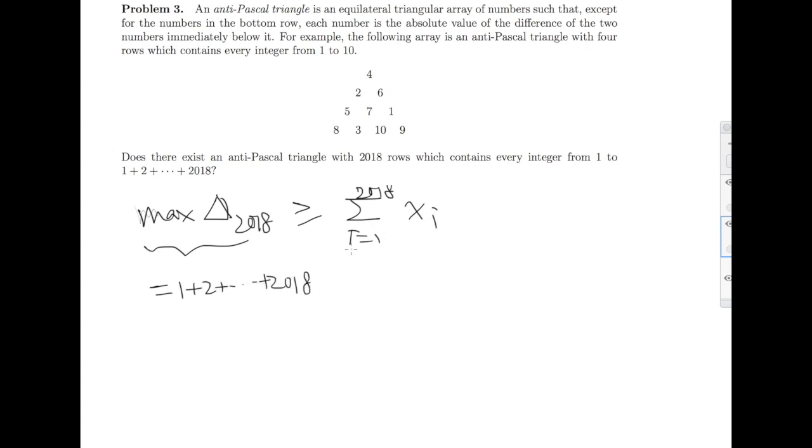By assumption, the maximum equals 1 plus 2 plus 2018. Also, since x_i are on different rows, they are different integers, so they must be larger than 1 plus 2 plus 2018.